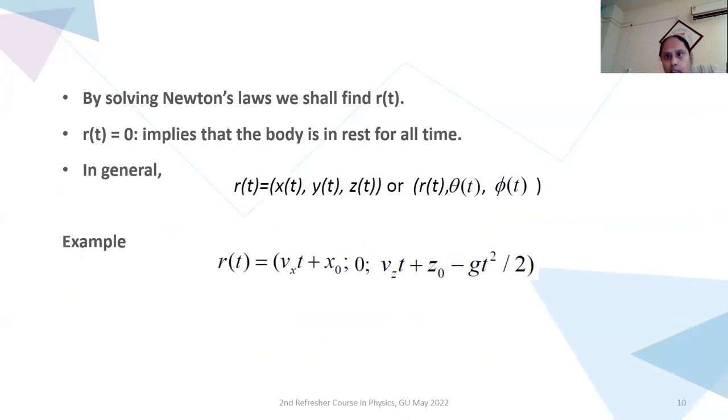Now let us solve Newton's laws and for that we want to find R of T. R of T is distance at any point of time T. Obviously R of T is zero when body is at rest for all time. In general, we have R of T in the direction of X, Y, and Z. So we say X of T, Y of T, and Z of T.